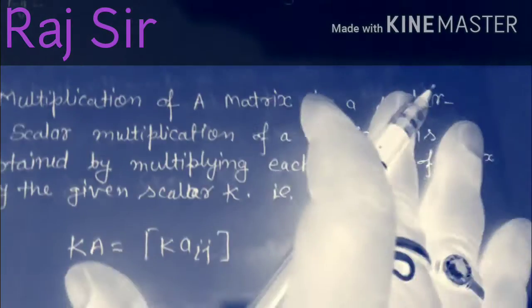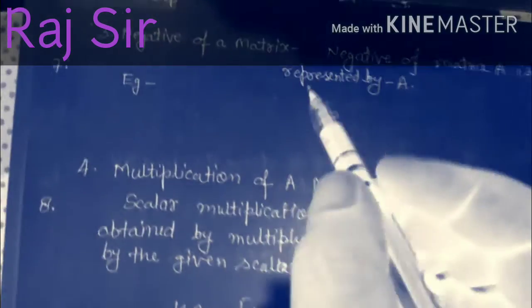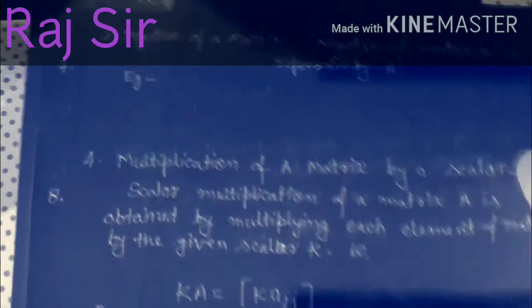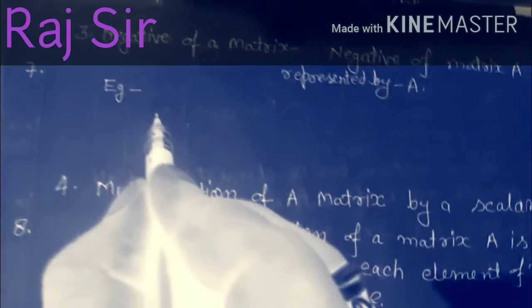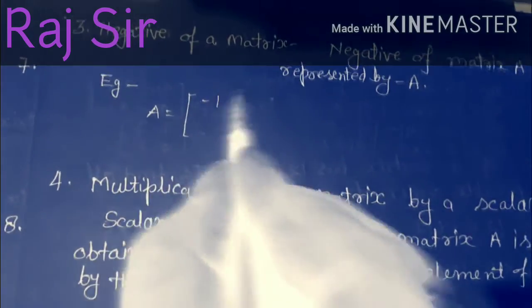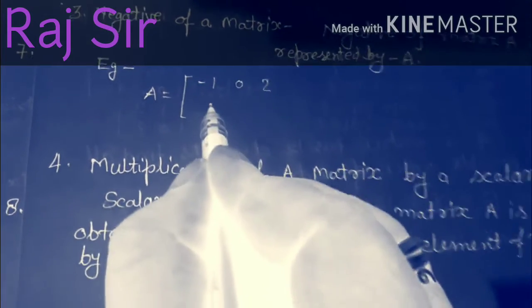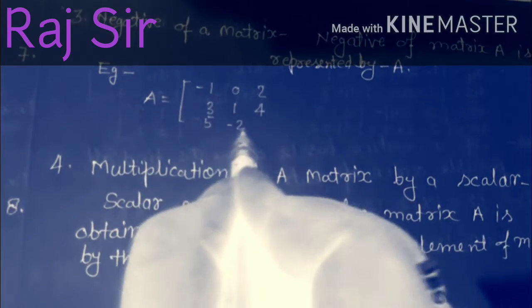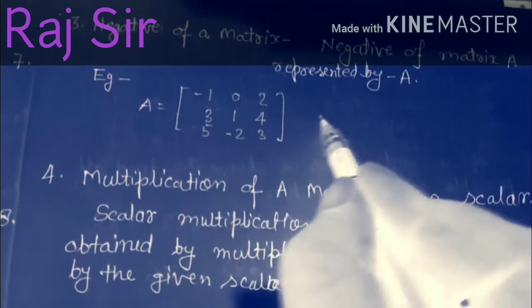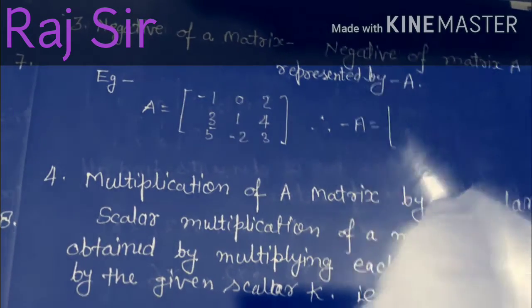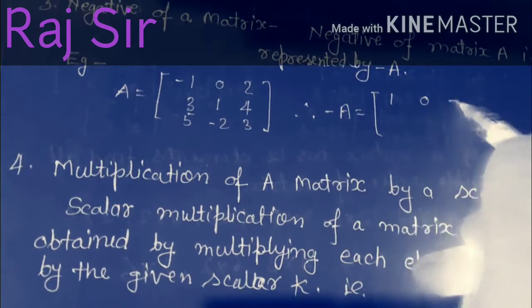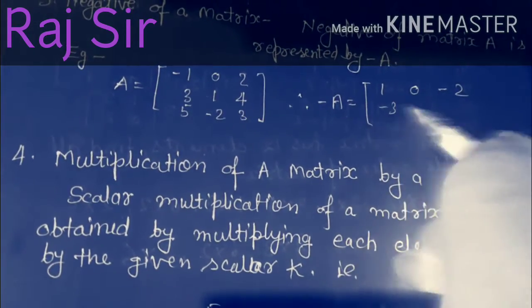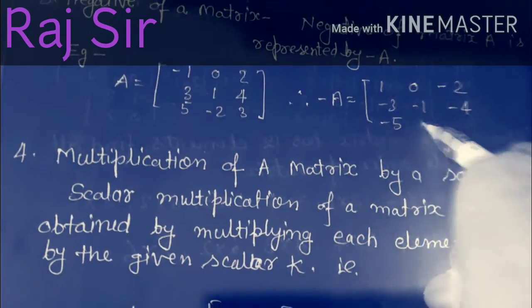Next operation: negative of a matrix. The negative of a matrix A is represented by minus A. For example, A equals [minus 1, 0, 2; 3, 1, 4; 5, minus 2, 3]. Therefore, minus A equals each element multiplied by minus 1: [plus 1, 0, minus 2; minus 3, minus 1, minus 4; minus 5, 2, minus 3]. This is the negative of a matrix.